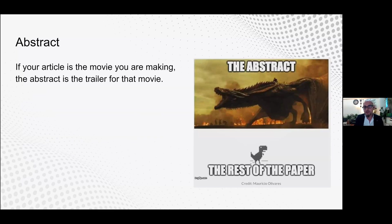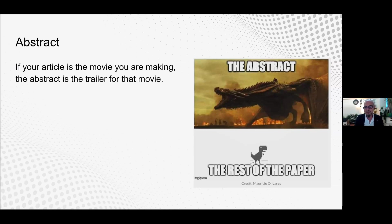When it comes to the abstract, it gives readers a preview and informs them what comes next. If your article is the movie you are making, the abstract is kind of the trailer for that movie. The abstract is where readers look for answers to questions like: What is in this article? Is this article worth reading? Is this the article I'm looking for? So the abstract should answer the 'why' questions like the importance of your research, the 'how' question like the methodology, and the 'what' question like the results. But do not overdo it when writing an abstract.